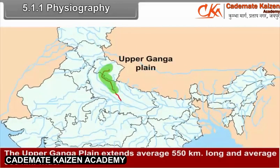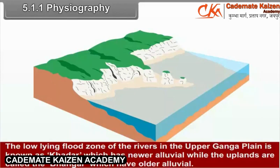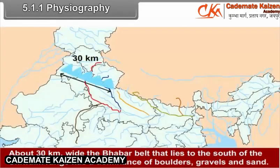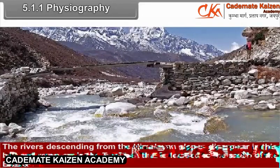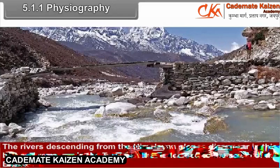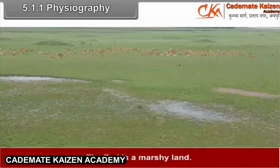The Upper Ganga Plain extends approximately 550 km long and 380 km wide. It is located in western Uttar Pradesh. The low-lying flood zone of the rivers in the Upper Ganga Plain is known as Khadar, which has newer alluvium, while the uplands are called the Bhangar, which have older alluvium. About 30 km wide, the Bhabar belt lying to the south of the Shivalik range has a dominance of boulders, gravels and sand. The rivers descending from the Himalayan slopes disappear in this belt and reappear in the Tarai belt to the south. The Tarai is a marshy land.